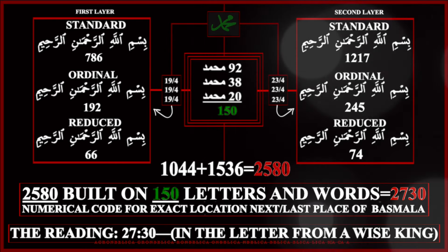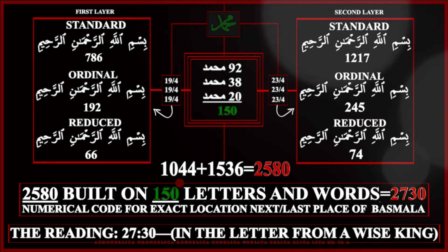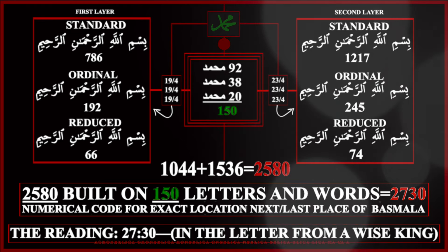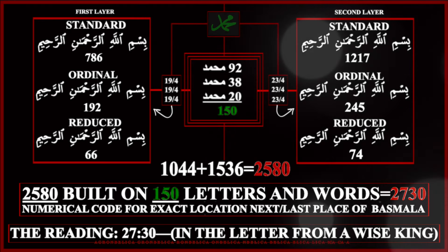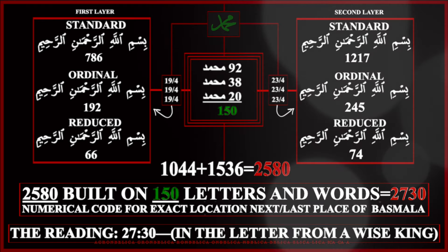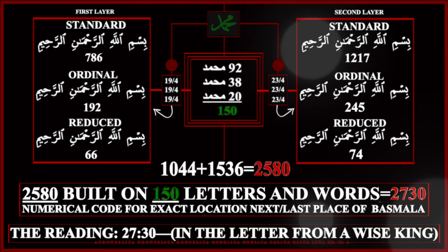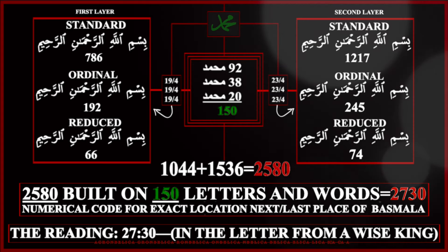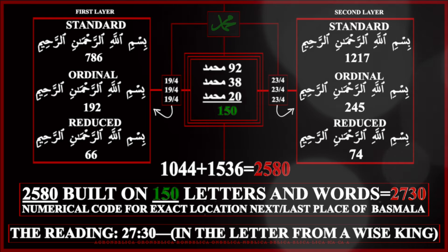It just so happens that the numerical code 150 is the same as the numerical code for the name Muhammad: standard 92, ordinal 38, reduced 20, for a total of 150. 150 letters and words revealed to the unlettered Prophet — the evidence is in the name Muhammad.